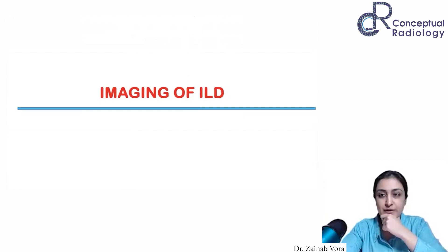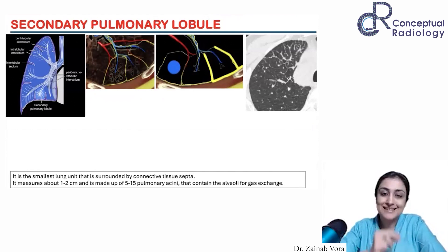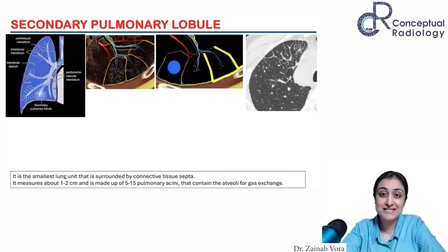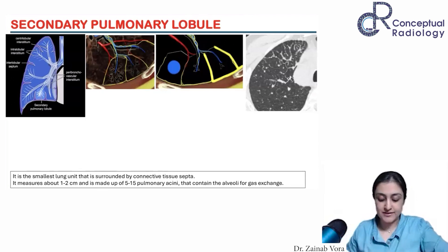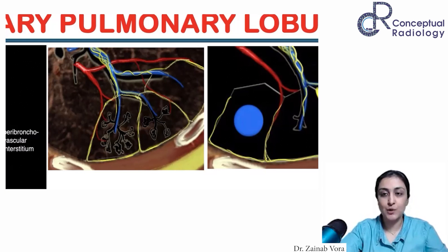Let's start with imaging of interstitial lung diseases and the pattern approach. The basic concept you need to remember in thoracic imaging is the secondary pulmonary lobule - this is the smallest functional unit for us radiologically. Anatomically we have terminal bronchiole, respiratory bronchiole, alveolar duct opening into alveolar sacs, but radiologically our unit for pathology is the secondary pulmonary lobule. In the center of the lobule you have the centrilobular artery entering, along with the respiratory bronchiole dividing into acinar ducts.